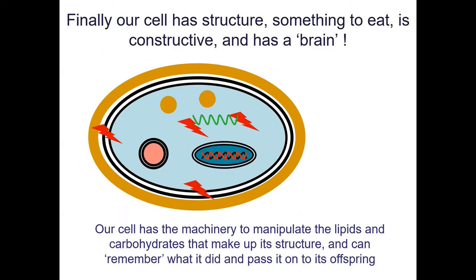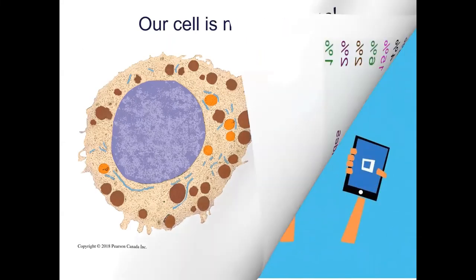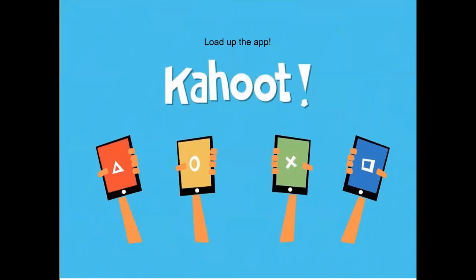So there's our cell — it's got a brain now, it's got some DNA, and it's ready to go. This doesn't include solutes and small molecules, but you get the idea of what all those macromolecules are. Before we go to the next unit, I have a Kahoot for you — load up the app and we'll play.